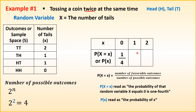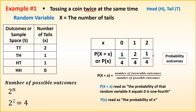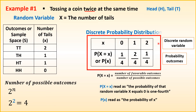The probability outcomes combined with the discrete random variable form what we call the discrete probability distribution. When we combine the probability outcomes and the discrete random variable, we form the discrete probability distribution.